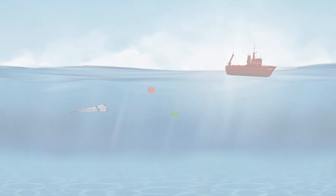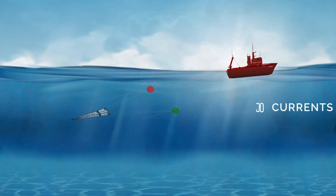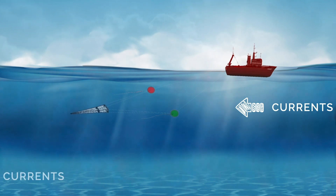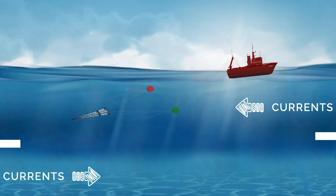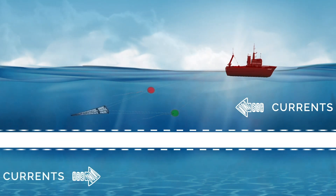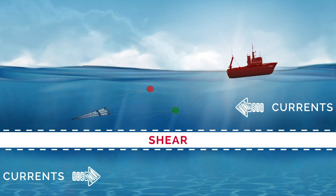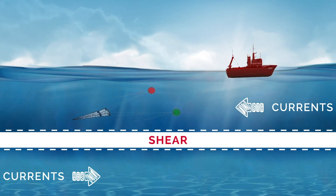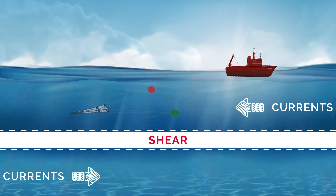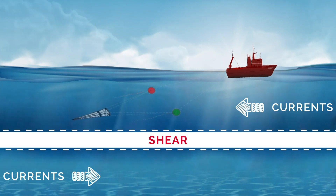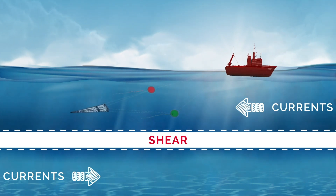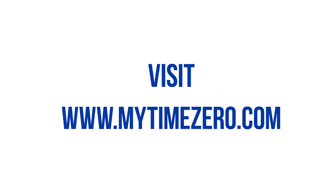Shear. Protect your net by predicting shear areas in your fishing zone. With shear data, you can display the variations between the strength of the currents from one depth to another. Time Zero automatically identifies dangerous areas that can damage your fishing net. For more information, visit www.mytimezero.com.